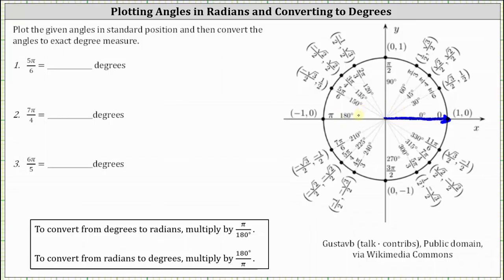Dividing pi radians into six equal parts, we have one-sixth pi, two-sixth pi, three-sixth pi, four-sixth pi, five-sixth pi, and six-sixth pi, or pi radians. Continuing around the circle: seven-sixth pi, eight-sixth pi, nine-sixth pi, ten-sixth pi, eleven-sixth pi, and twelve-sixth pi, or two-pi radians.